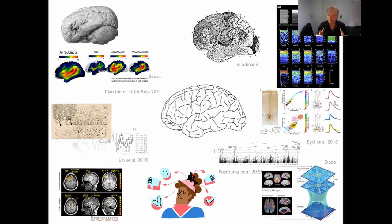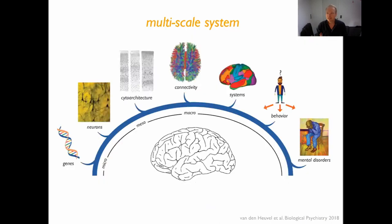HIBALL and BigBrain are leading examples of how we can start combining all these different levels of information and integrating them. Today I want to discuss multi-scale properties of the brain. The brain is definitely not a unimodal system — we can study it from multiple angles — but we also have to realize that it is inherently multi-scale, with different aspects that need to be integrated with each other.